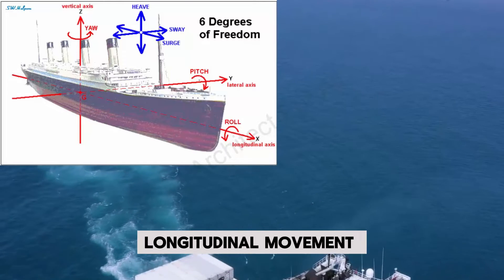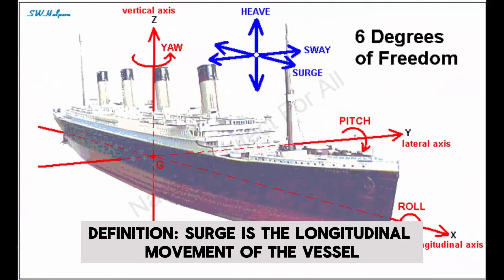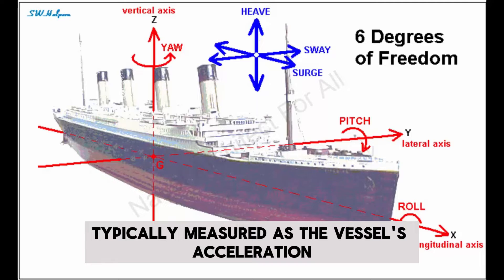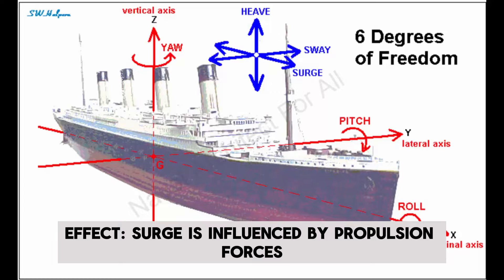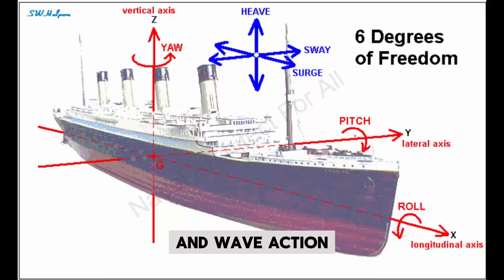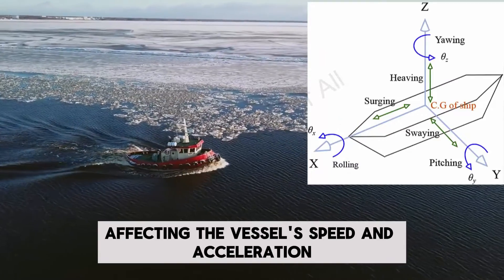3. Surge — Longitudinal Movement. Definition: Surge is the longitudinal movement of the vessel along the x-axis (fore and aft direction), typically measured as the vessel's acceleration or deceleration. Effect: Surge is influenced by propulsion forces (forward or reverse thrust) and wave action, affecting the vessel's speed and acceleration.